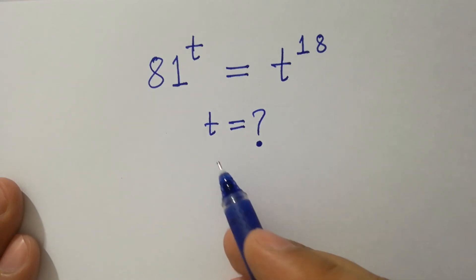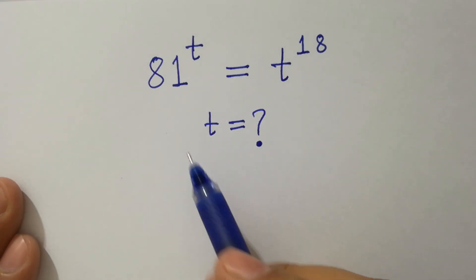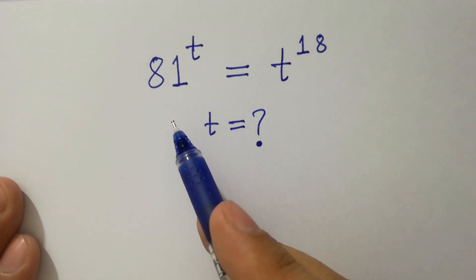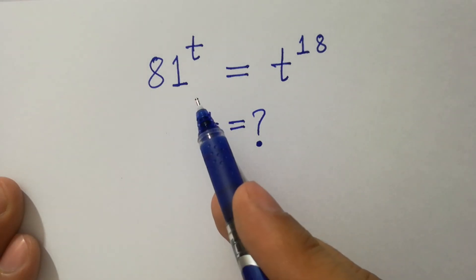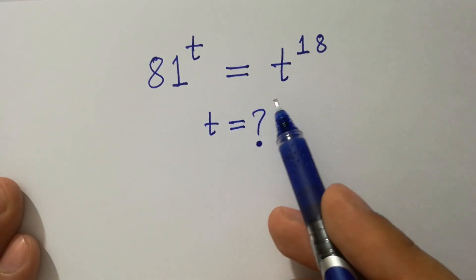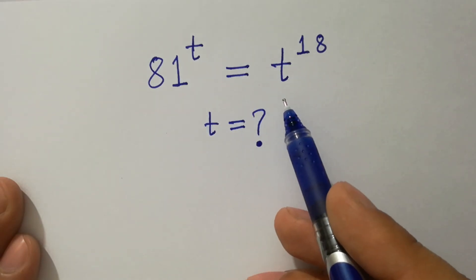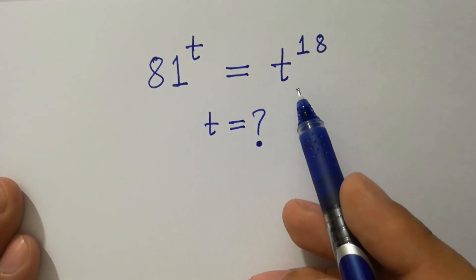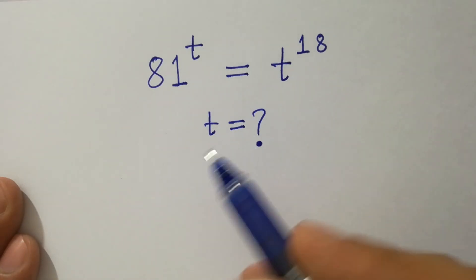Hello friends. Find the value of t if 81 to the power t equal to t to the power 18. Let's have a solution.